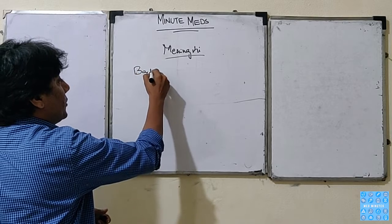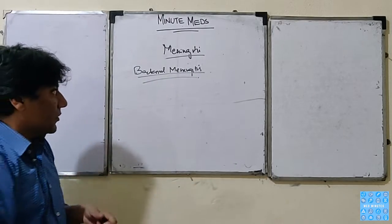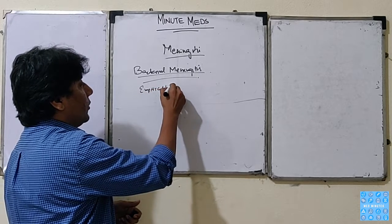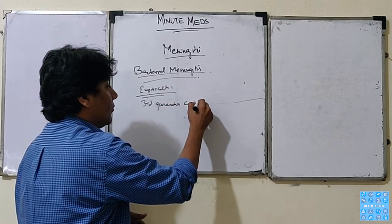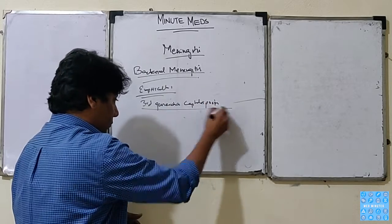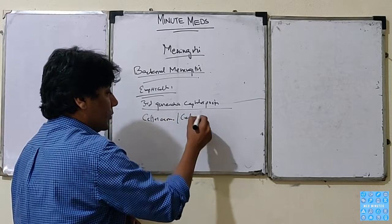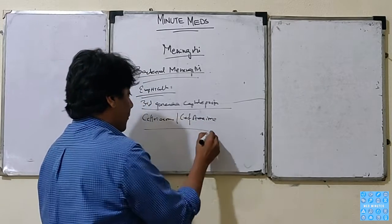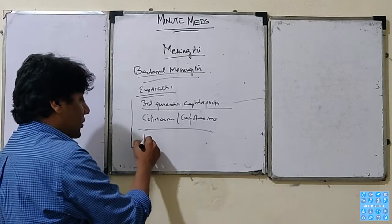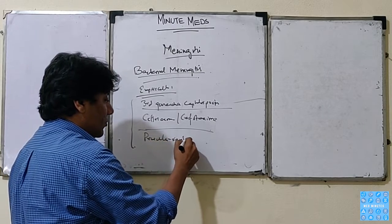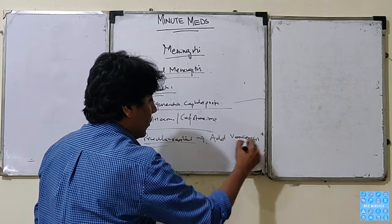In the case of bacterial meningitis, we use third-generation cephalosporins — usually Ceftriaxone or Cefotaxime — as empirical treatment. When the culture result comes back showing the patient is penicillin-resistant, then we add vancomycin or rifampicin.